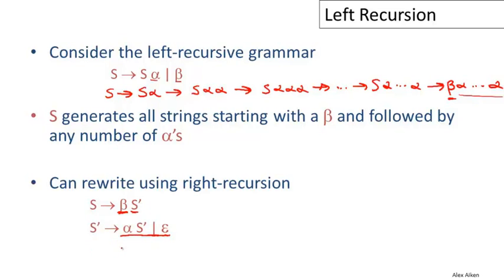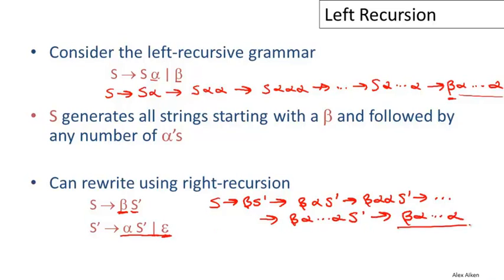And if you write out an example derivation here, we'll have S goes to beta S prime, which goes to, now using the rules for S prime, beta alpha S prime, which goes to beta alpha alpha S prime, and after any number of rewrites, we get beta followed by some sequence of alphas followed by S prime. And then in one more step, we use the epsilon rule here, and we wind up with beta followed by some number of alphas. And so you can see it generates exactly the same string as the first grammar, but it does so in a right recursive way instead of a left recursive way.